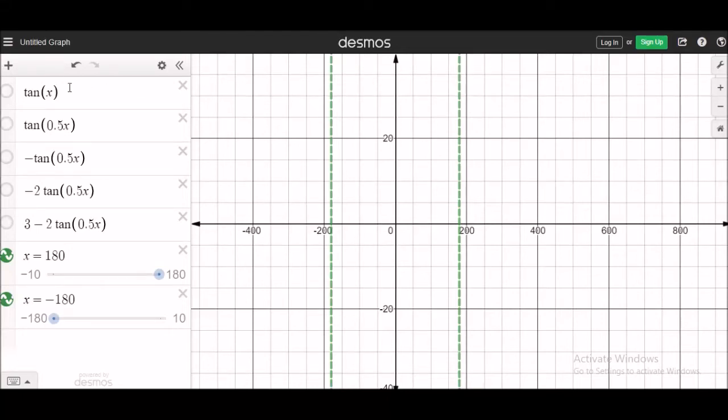Reference is made to question 13, page 154, part 3, on how to sketch 3 minus 2 tangent 0.5x from 0 to 180 degrees. So what I'm going to do, we are going to start the thought process with tangent x.